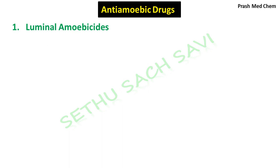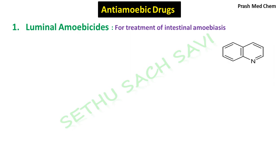Now coming to the first category of drugs called as luminal amoebicides. Luminal amoebicides act on amoeba present in the lumen of the bowel or intestine. Therefore, they can be used for the treatment of intestinal amoebiasis. Now before I start with the drugs belonging to this category, I want you to identify this particular heterocyclic ring. Yes, this is called as quinoline, which is nothing but a fusion of benzene ring with a pyridine ring.